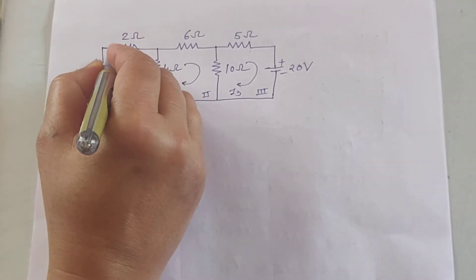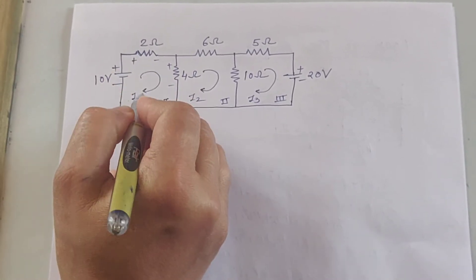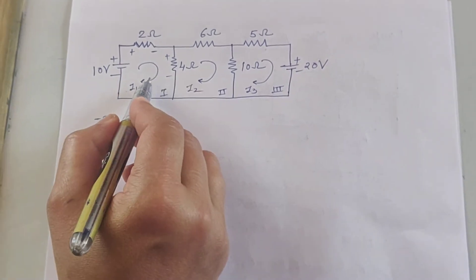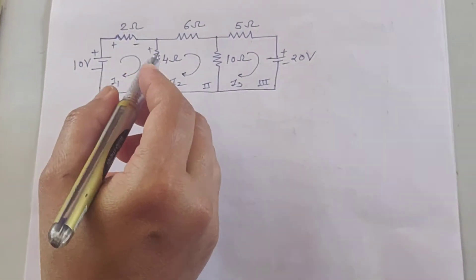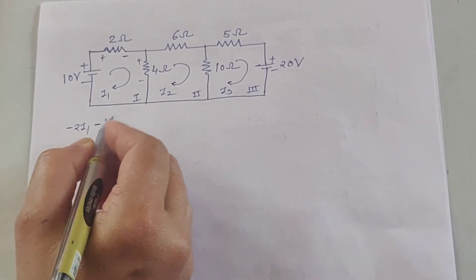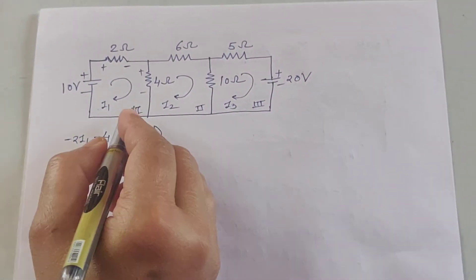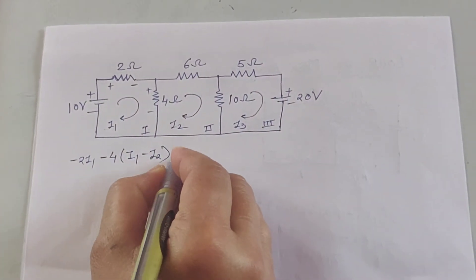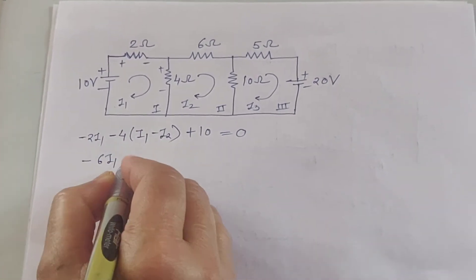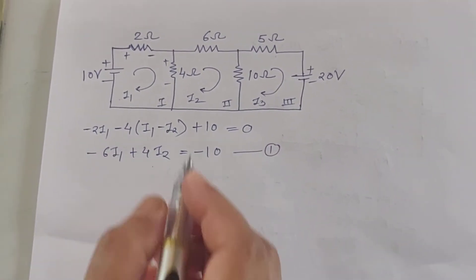Consider the first loop. The current direction is marked with polarity plus/minus. Applying KVL: it is minus 2·I1, then this 4-ohm resistor is common for the first and second loop, so the voltage drop is minus 4·(I1 minus I2), then the battery EMF from negative to positive is plus 10, equals zero. Solving this equation gives: minus 6·I1 plus 4·I2 equals minus 10. That is your first equation.